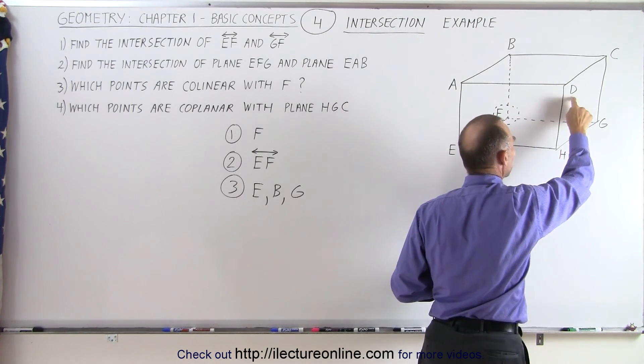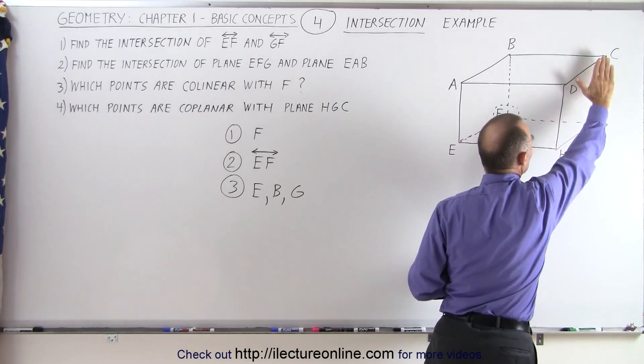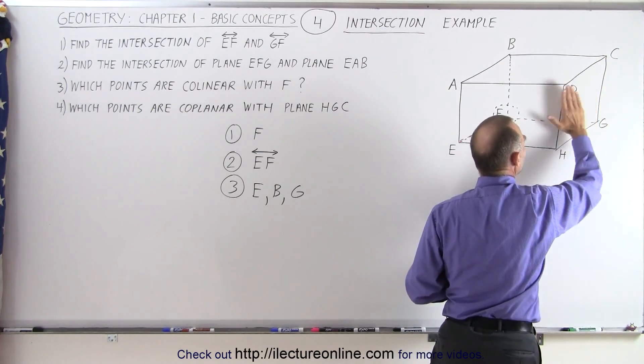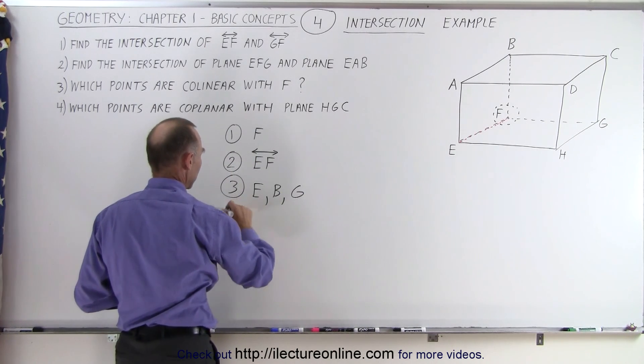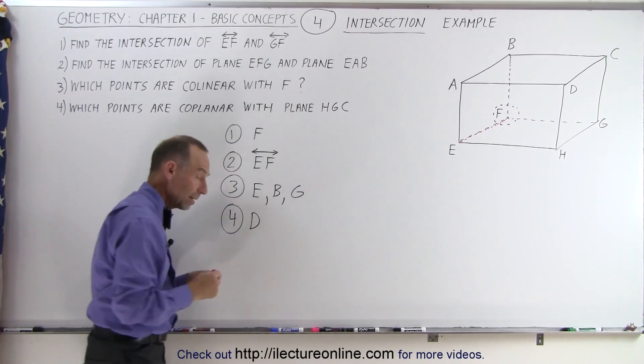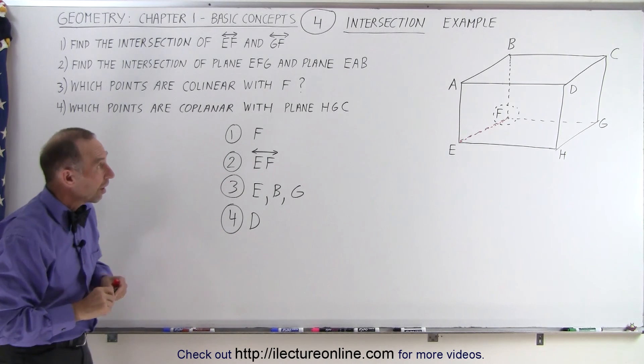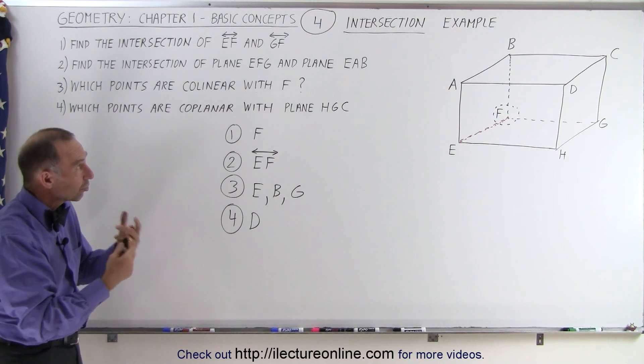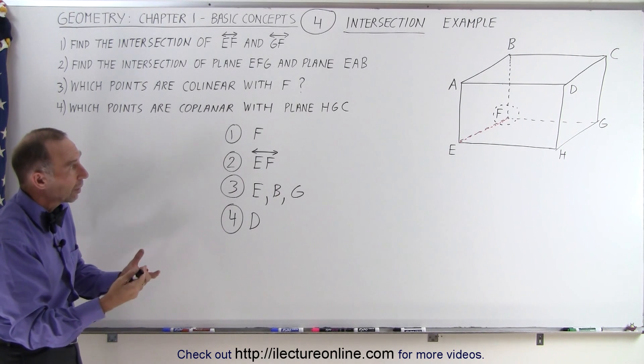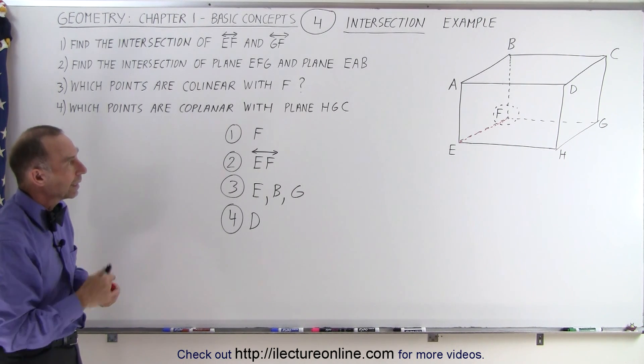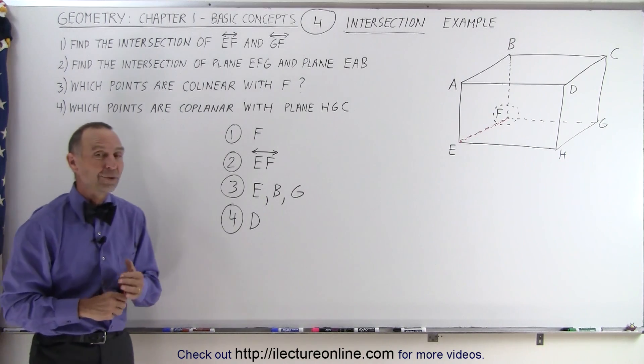So the answer for number four, it is D. Alright, hopefully that gives us a better feel, a better understanding of what we mean by intersection, what we mean by coplanar, what we mean by collinear. That's how it's done.